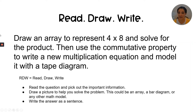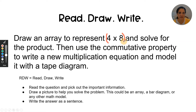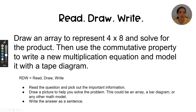I'm going to read it aloud and annotate it with important information. It says: draw an array to represent four times eight and solve for the product. Four times eight seems important. The unknown is the product — the solution. We know there are four groups of eight, or four rows of eight in our array. Then use the commutative property to write a new multiplication equation and model it with a tape diagram.